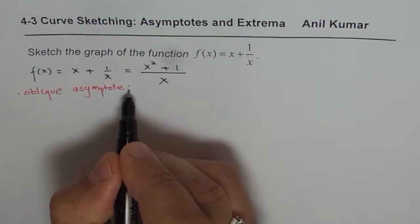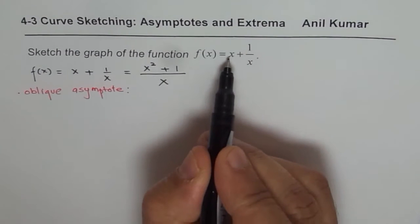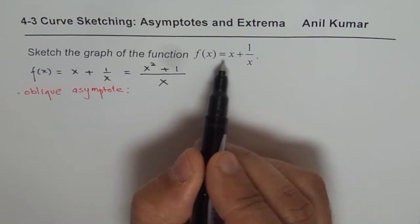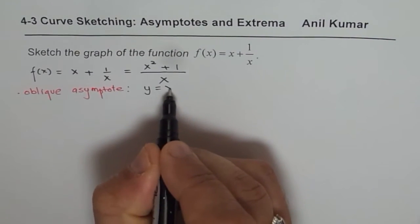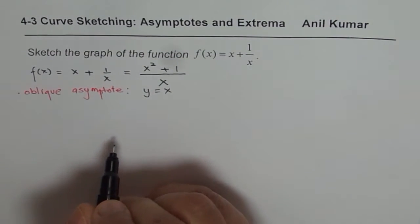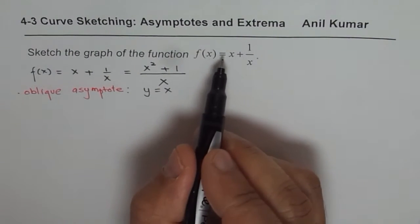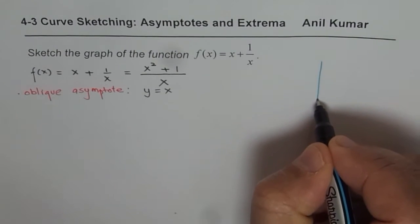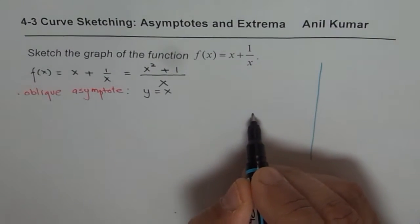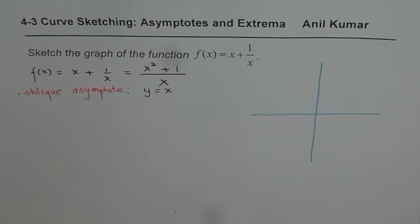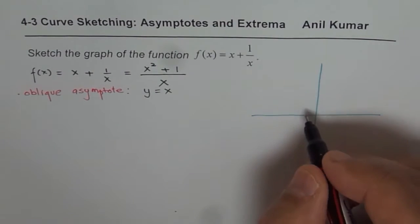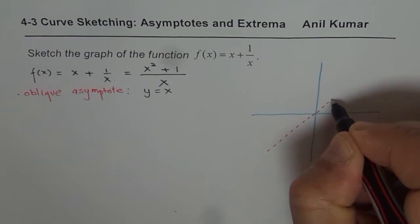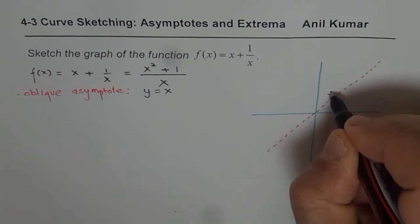The equation of the oblique asymptote: when you divide, you get x plus something. So as x approaches infinity, the function approaches x. Therefore, y = x is the equation of the oblique asymptote. Let me sketch this line — it goes through the origin.